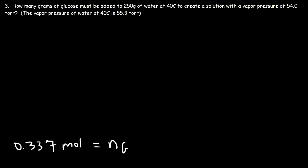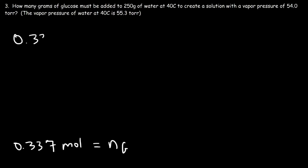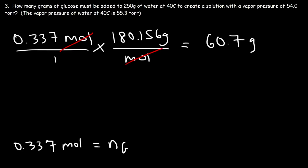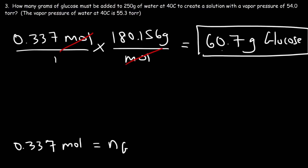The last step is to convert the moles of glucose to grams. Multiplying 0.337 moles by 180.156 grams per mole, we get 60.7 grams of glucose. So we need 60.7 grams of glucose to produce a solution with a vapor pressure of 54 torr at 40 degrees Celsius.